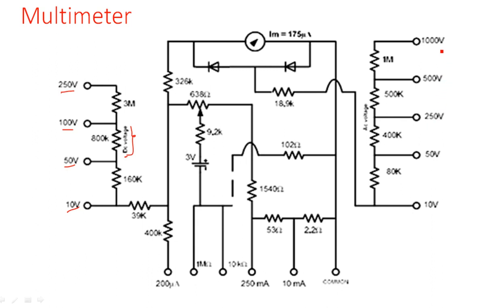Coming to the right-hand side, 1000 volts, 500, 250, 50, and 10 volts are given. This is also a part of the voltmeter, but it is the AC voltmeter section. In the AC voltmeter, an important element along with the multiplier resistor is the rectifier. See whether a diode is present — the output of the voltage divider network is given through 18.9 kilo-ohms and then to the rectifier elements: two diodes.